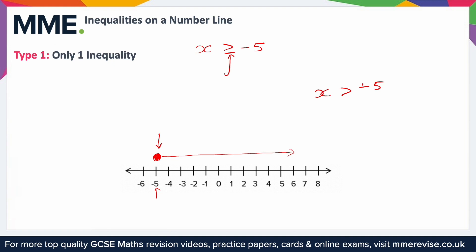Remember: if it's a closed circle — meaning the middle is filled in — that is an inclusive inequality such as greater than or equal to or less than or equal to. Whereas an open circle is a strict inequality, such as x is less than 2 or x is greater than 2.